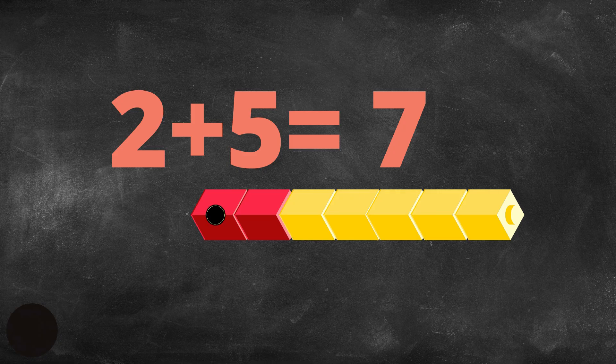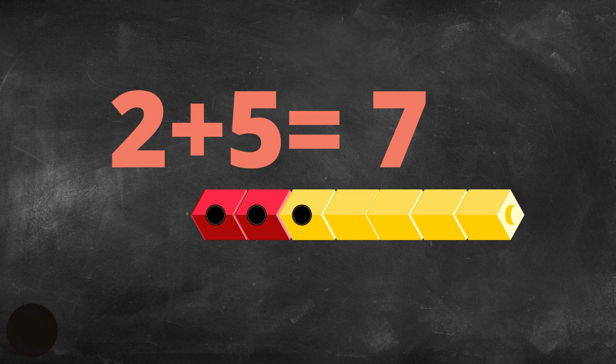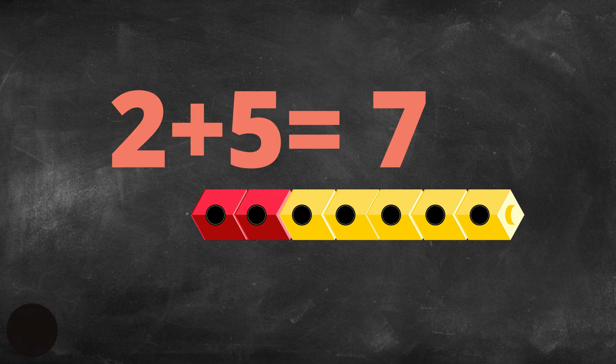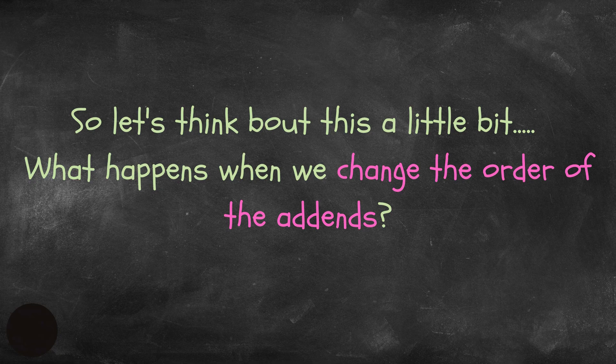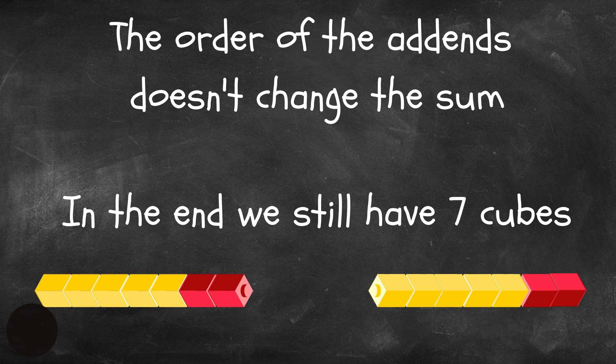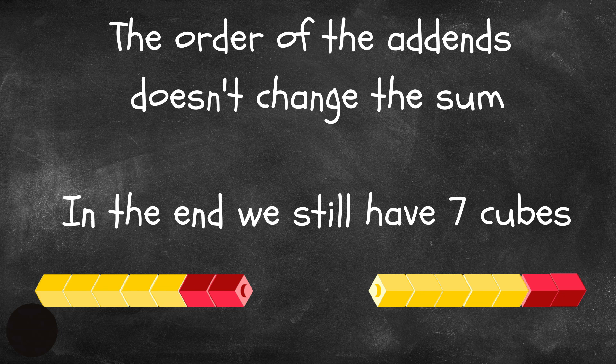Let's double check to make sure that they are really 7. 1, 2, 3, 4, 5, 6, 7. So, let's think about this a little bit. What happens when we change the order of the addends? The order of the addends doesn't change the sum. In the end, we still have 7 cubes in all.